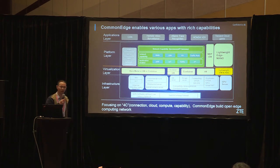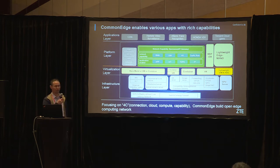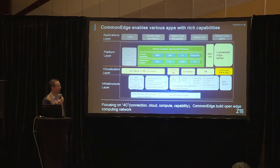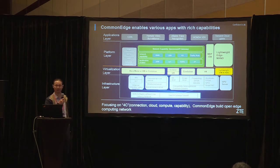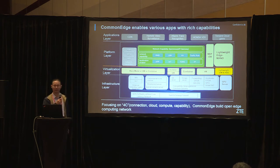Generally, we have four layers. The first is the infrastructure layer, which is the hardware composed of different kinds of servers — either commercial off-the-shelf servers or specific servers — with software-defined low-latency network equipment.